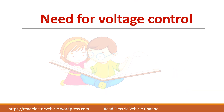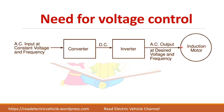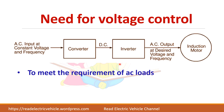Let us see what is the need for voltage control. Suppose you take an example of an induction motor — if you want to control the speed of this motor we need to maintain the V by F ratio constant. In such cases we have to control the inverter, and some applications may require a constant voltage at the inverter output. So depending upon the application we need to control the output voltage of the inverter.